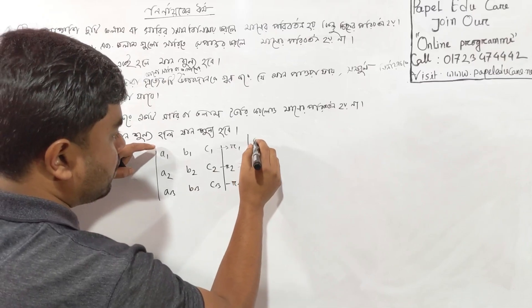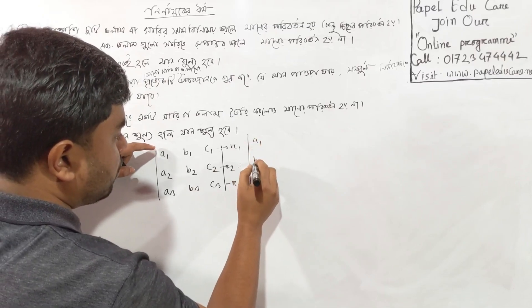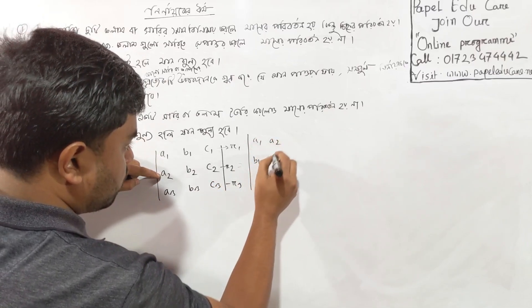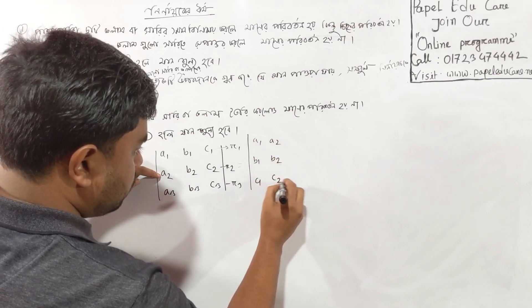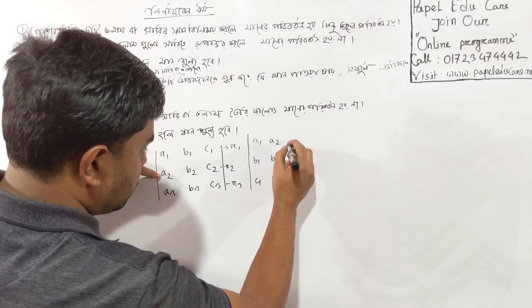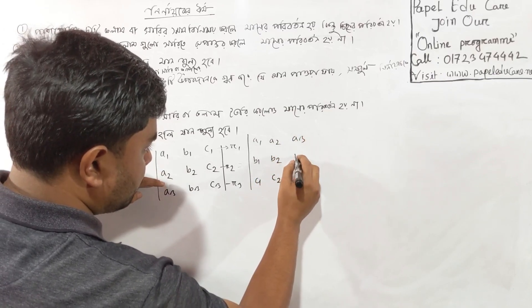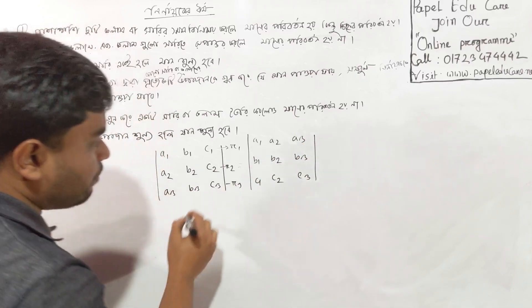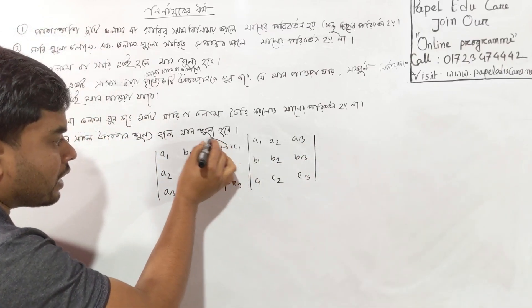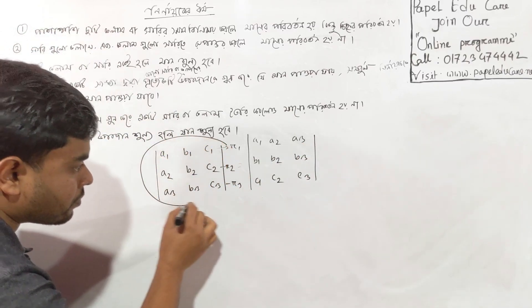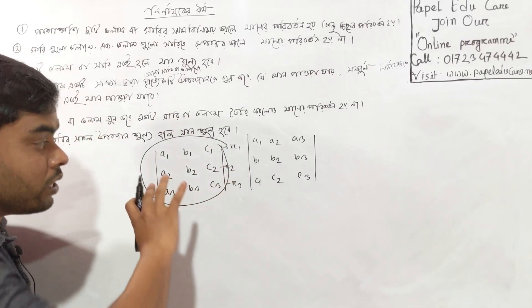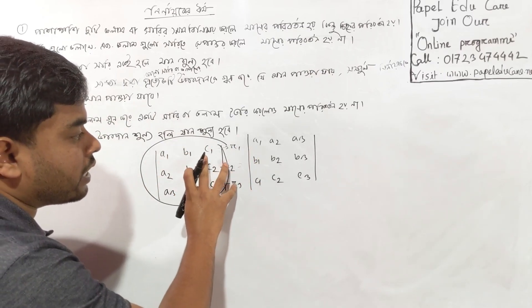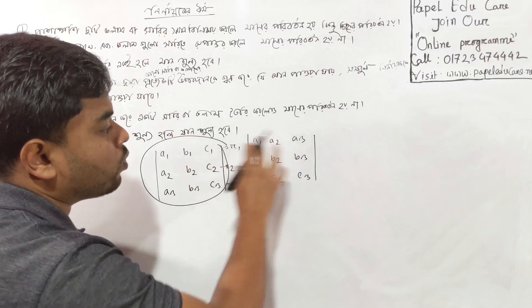I will write a1, d1, c1; a2, b2, c2; a3, b3, c3. So, I will convert this column. I will convert this column to the column.